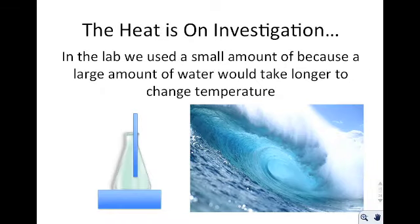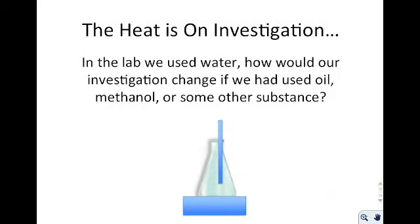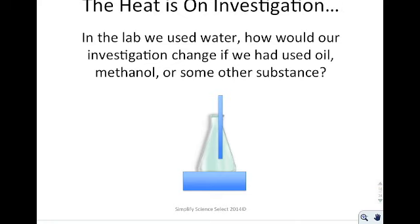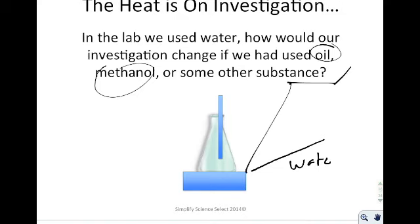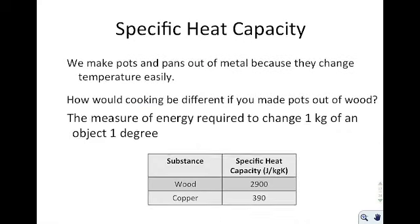In the Heat Is On investigation, we used a small amount of water because a large amount would take a long time to heat. Water has an incredibly high resistance to changing temperature. That's one of the factors we want to investigate — why metal heats up relatively easily while water does not. If we had used oil or methanol, the temperature would have spiked rapidly instead of gradually increasing. This difference is called the specific heat capacity.